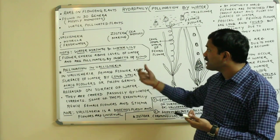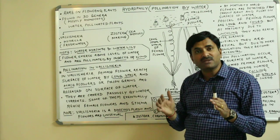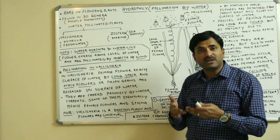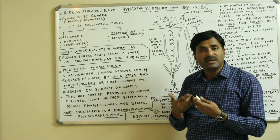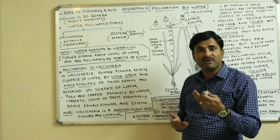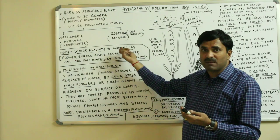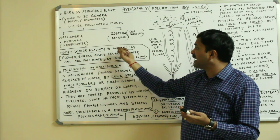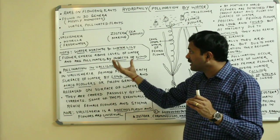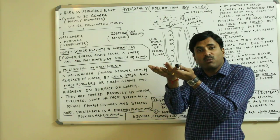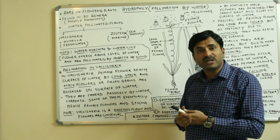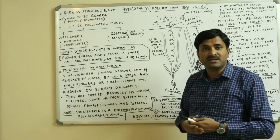It is not necessary that all aquatic plants show hydrophily. There are aquatic plants that show pollination by insects or by wind instead. Two common examples are water hyacinth (Eichhornia) and water lily — their flowers emerge above the water level and are pollinated by insects or wind.